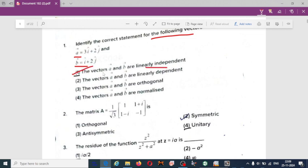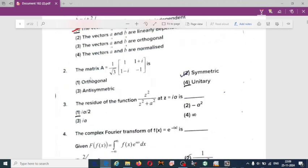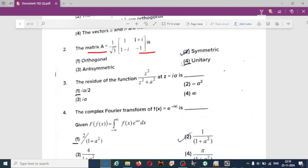The matrix one divided by root three into [[1, 1+i], [1-i, -1]] - if you solve this matrix, the answer you will get is unitary. This is the unitary matrix that is equal to one.